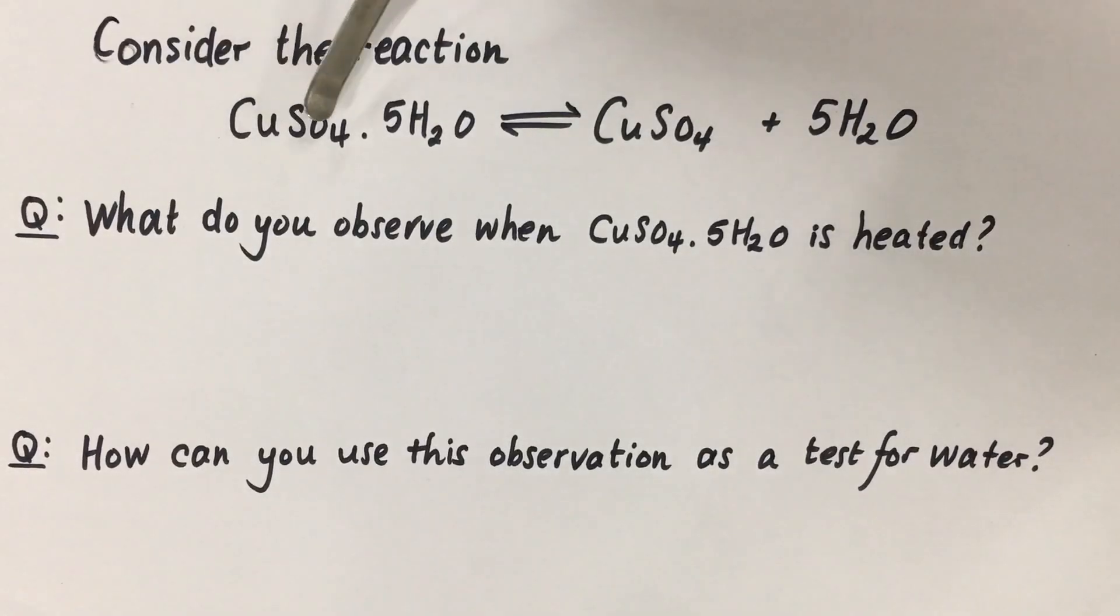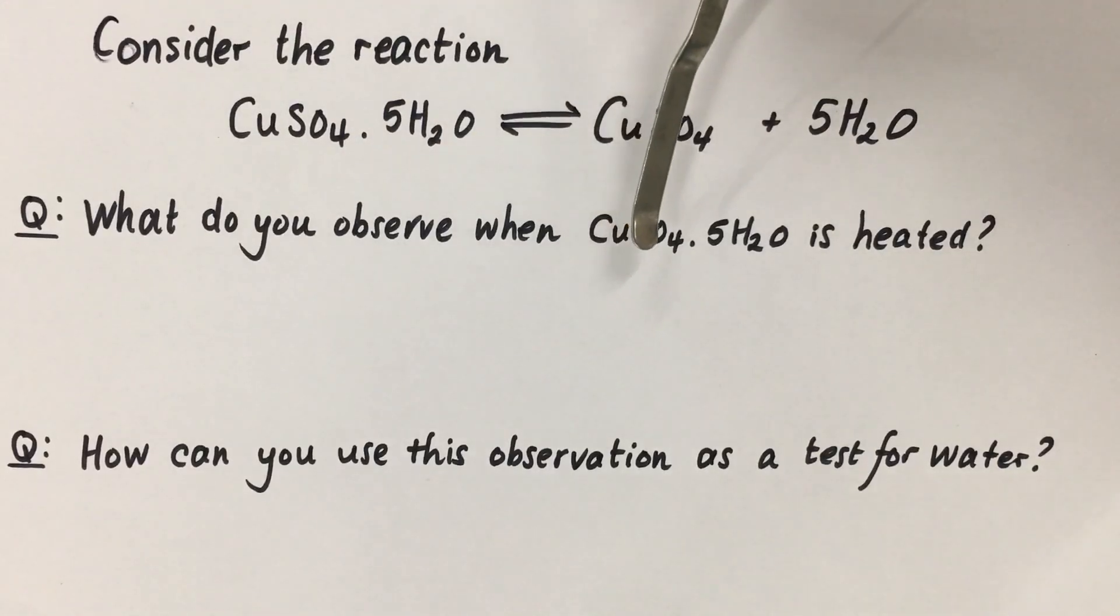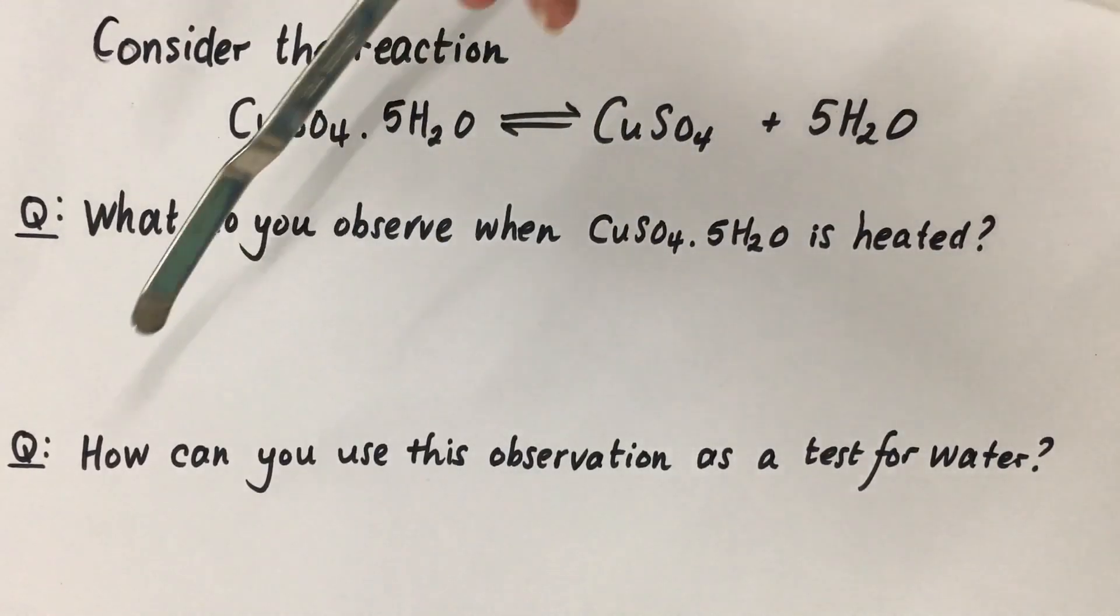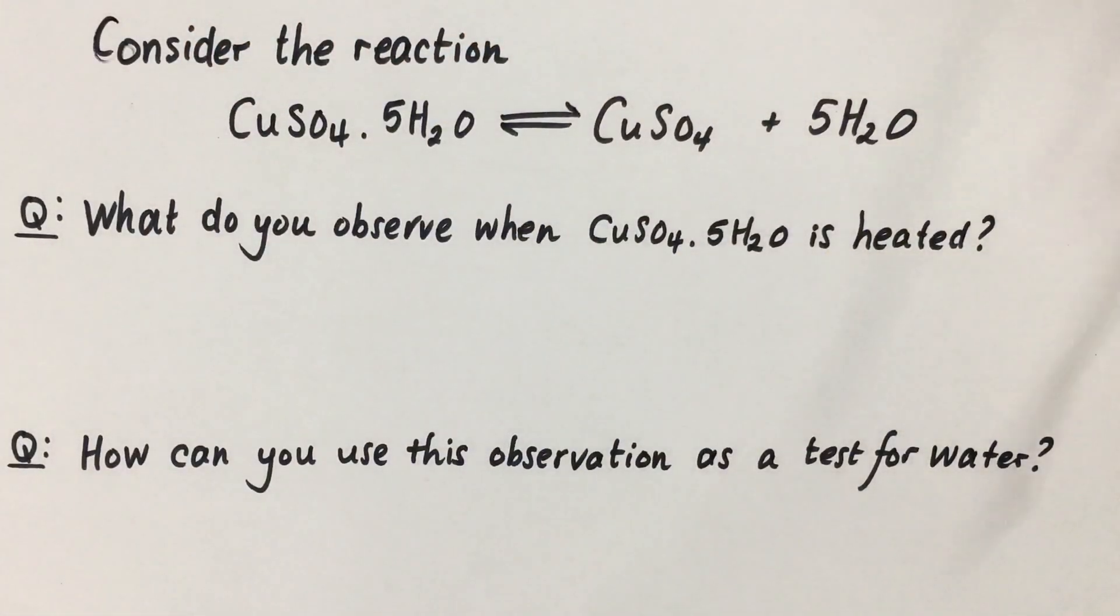Consider the reaction CuSO4·5H2O goes to CuSO4 plus 5H2O. The first question is: what do you observe when CuSO4·5H2O is heated? And the second question is: how can you use this observation as a test for water?